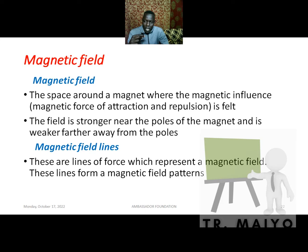This magnetic field — which is the region around a magnet where the magnetic influence is felt — is stronger near the poles of a magnet and weaker far away from the magnet. Just like when you are close to a very hot object you feel a lot of heat, but when you are far from it you feel less heat.